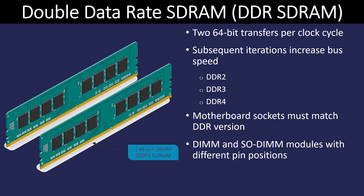So you can see we've managed to get more performance out of the same amount of memory. The transfer speed between the RAM and the motherboard must be the same. If you have a motherboard that does not support DDR4 and you install DDR4 into it, it's not going to work. The DIMM and SODIMM modules have different pin positions, which makes it impossible to install them in the incorrect slot.